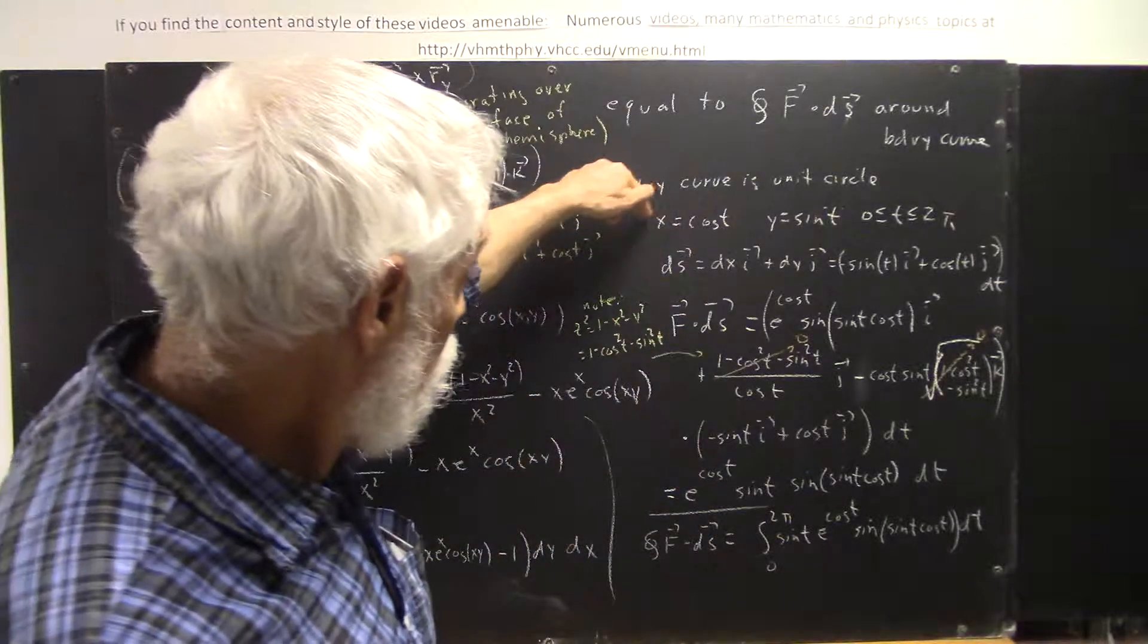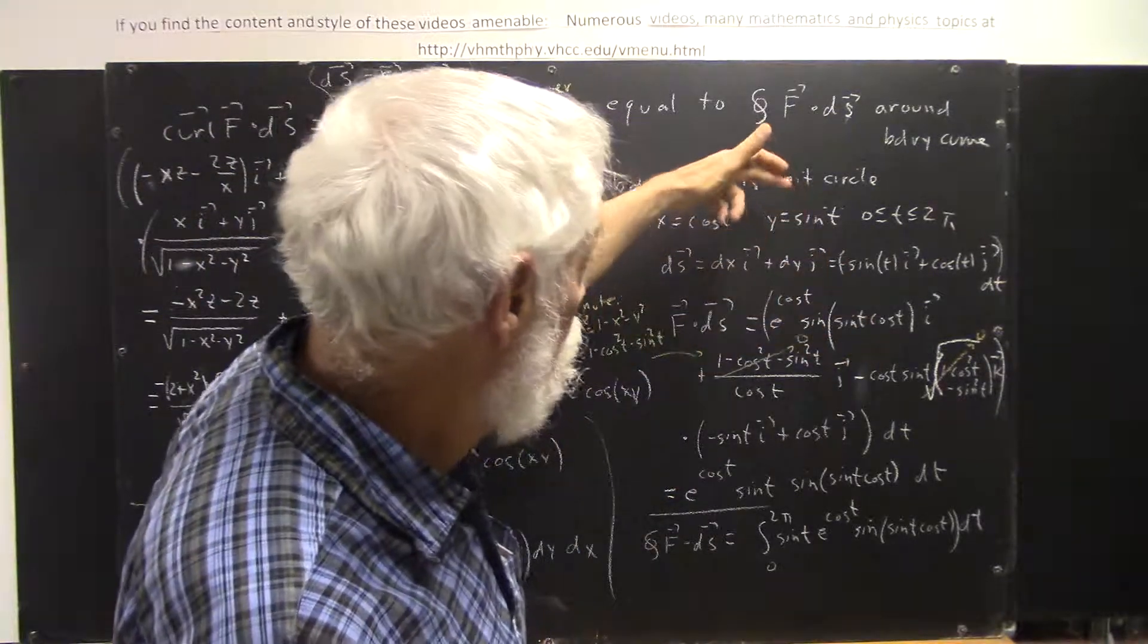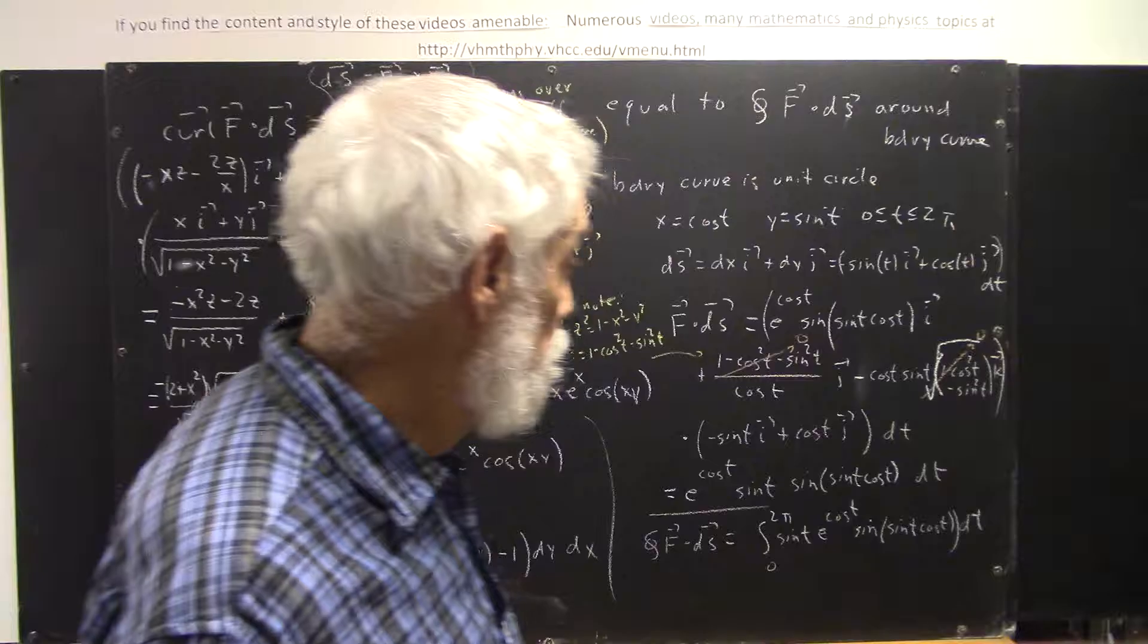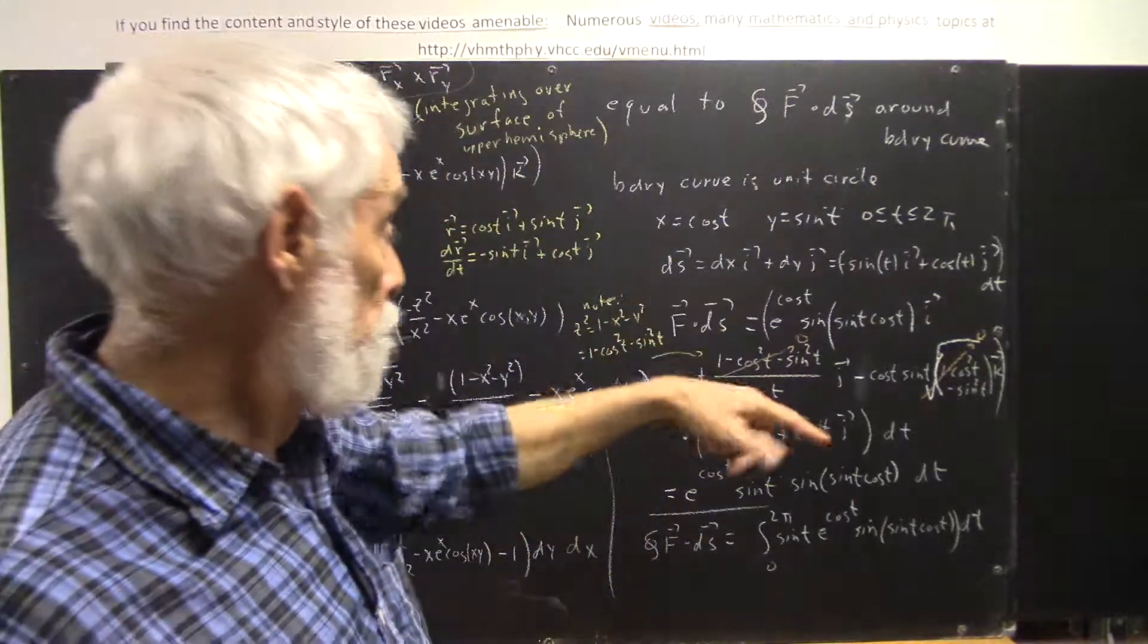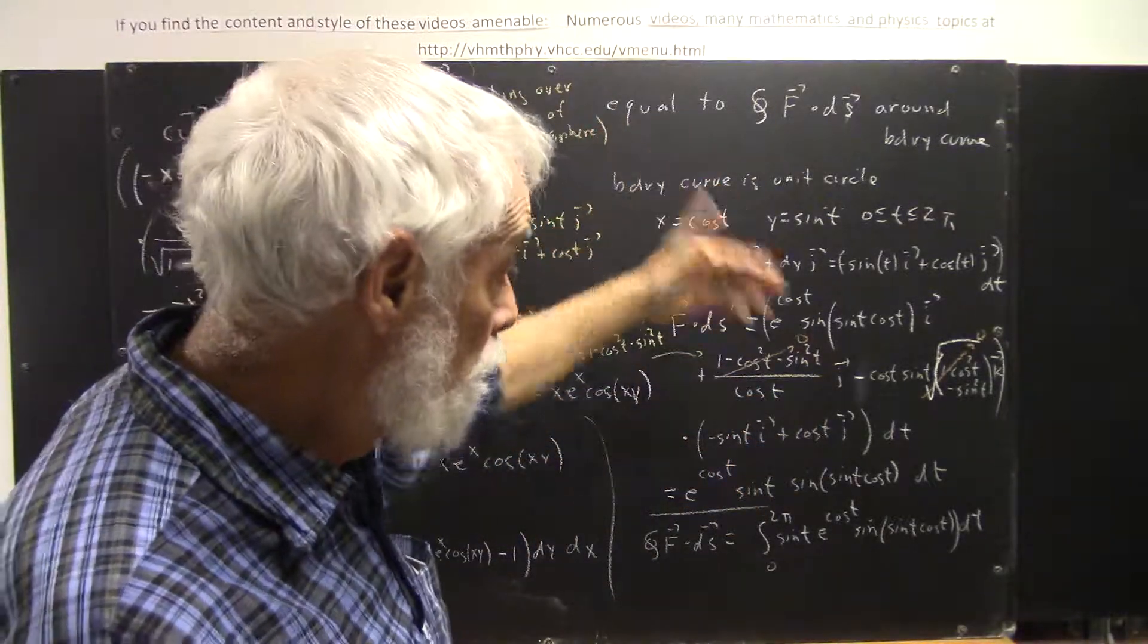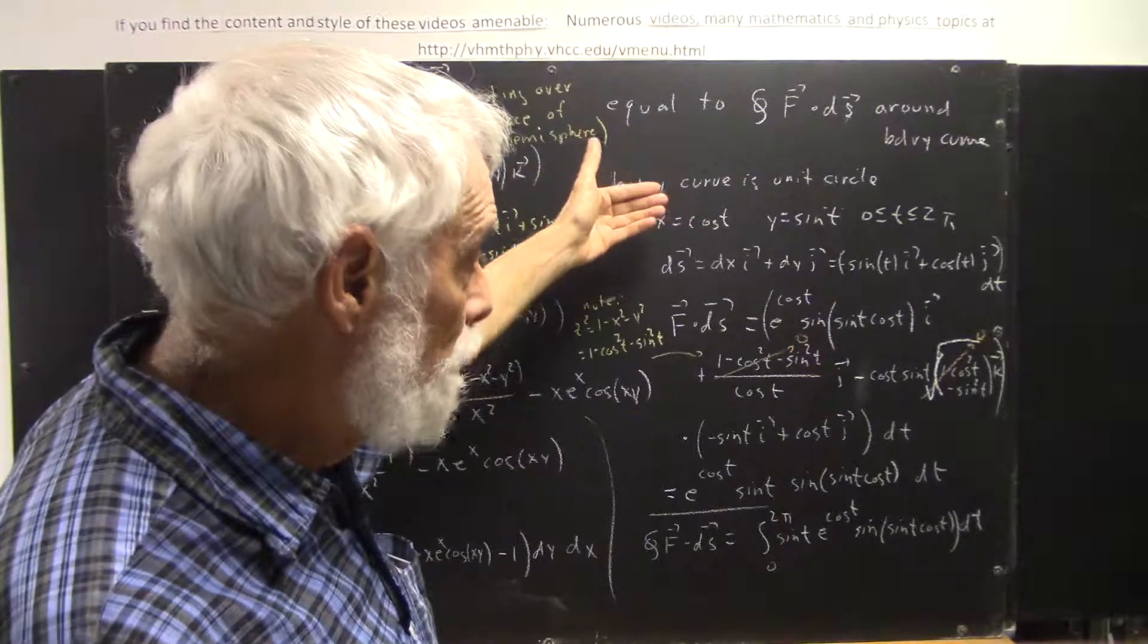So, as we move along this curve, ds, which is dx times i plus dy times j, the vector displacement becomes what?